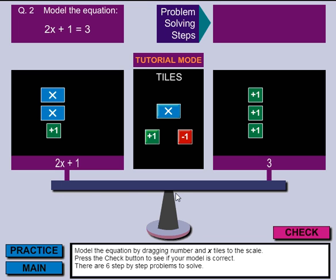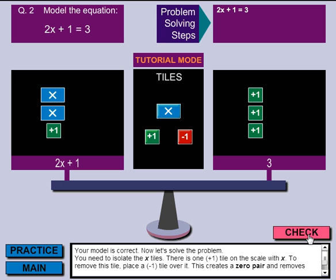Okay, so now we've just modeled the equation 2x plus 1 equals 3. You can see the balance beam is balanced and they are equal. Well, after I check this, it tells me your model is correct. Now let's go ahead and solve the problem.